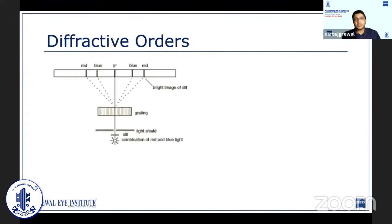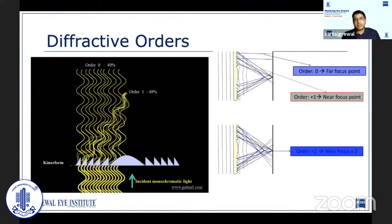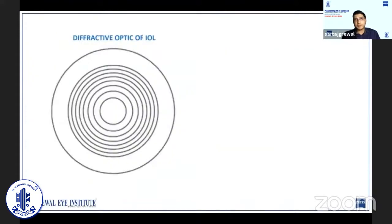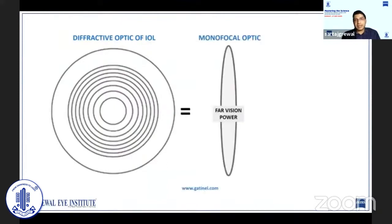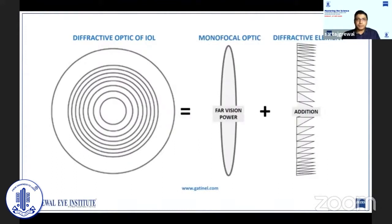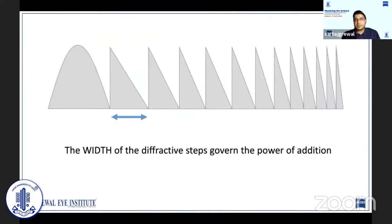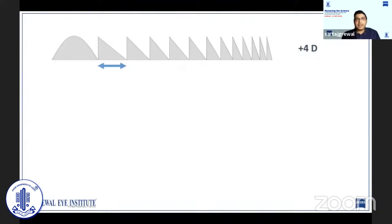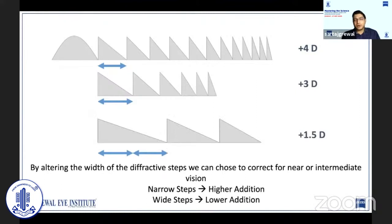During diffraction, the first bright image occurring to either side is called the first order diffraction. In diffractive multifocal IOLs, near vision is a result of the first orders of diffraction produced as a result of constructive interference as the waves spread beyond the IOL. A diffractive presbyopia-correcting IOL is simply a combination of a normal monofocal optic correcting for distance and a diffractive element providing addition for near. The diffractive element consists of numerous prism-shaped steps of varying width and height. The narrower the diffractive step, the greater the near addition; the wider the diffractive step, the lower the near addition. The width of these steps can be altered to choose between correction for near or intermediate vision.